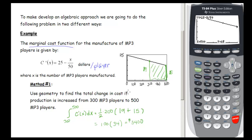So the total change in cost when increasing production from 300 to 500 MP3 players is $3,400. This does not mean the cost at 300 or 500 is $3,400 — it means that going from 300 to 500, this is the additional cost incurred. Now let's look at this same problem using a different method.